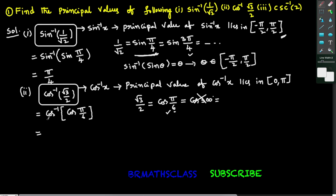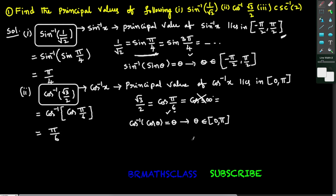It looks like cos inverse of cos theta. We know this formula: cos inverse of cos theta equals theta. This formula holds good when theta belongs to the closed interval 0 comma pi. So cos inverse of cos pi by 6 you can write as pi by 6. Therefore the principal value of cos inverse of root 3 by 2 is pi by 6.